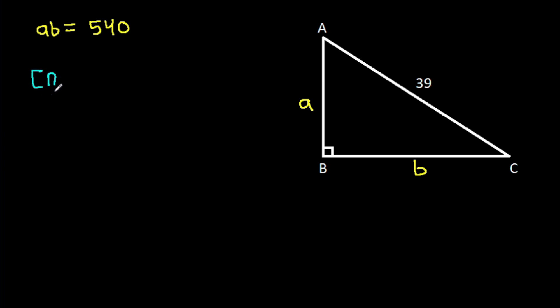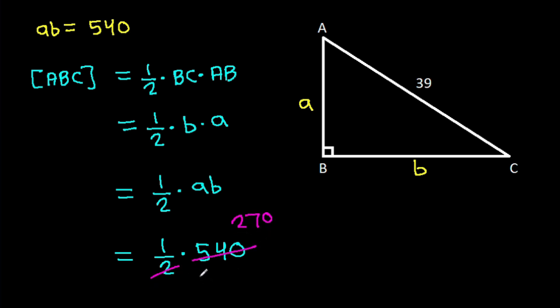And area of ABC will be 1/2 times base BC and height AB. And it is 1/2 times BC is b times AB is a, which is 1/2 times AB. And it is 1/2 times 540. And 2 times 270 is 540, so it will be 270.